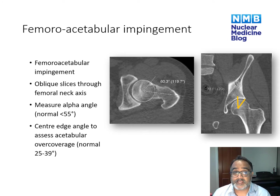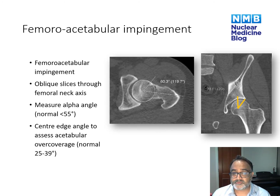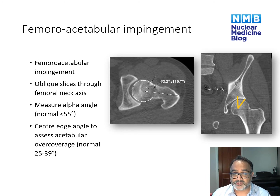The other thing we can look at is the center edge angle, best done on the coronal image. You draw a line from the center of the femoral head vertically through the acetabulum, and then from the center point of the femoral head to the lateral margin of the acetabulum. This angle should be between 25 and 39 degrees. More than 39 degrees suggests over-coverage of the femoral head by the acetabulum; less than 25 degrees indicates under-coverage.